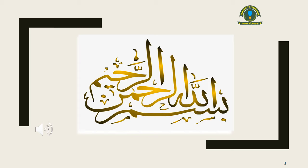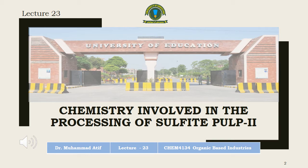Bismillahirrahmanirrahim. Dear students, this is the 23rd lecture of organic based industries. The topic we are going to discuss is the second part of the last lecture which was chemistry involved in processing of sulfite pulp.